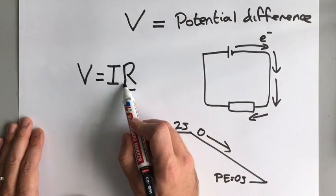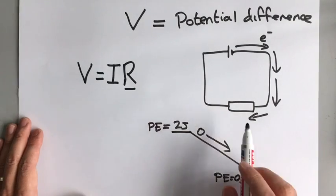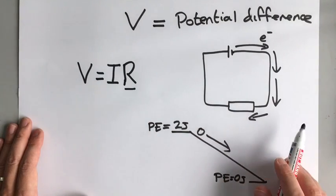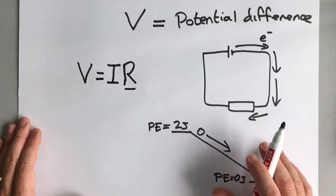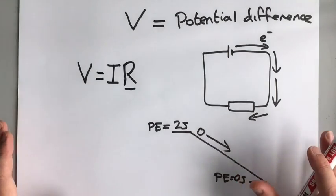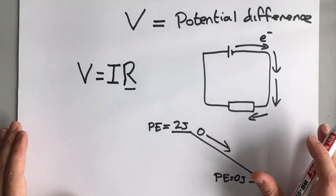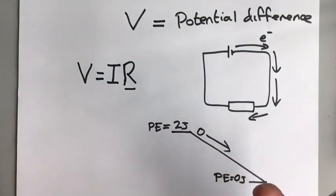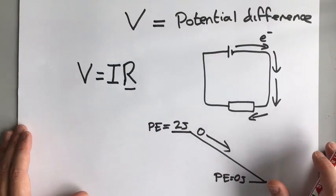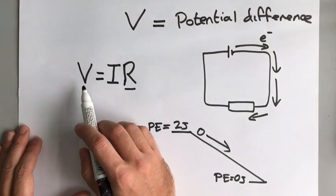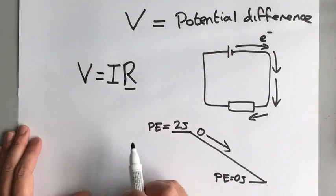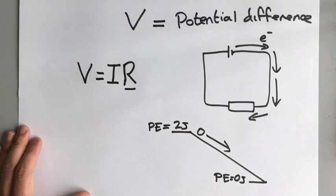Resistance is how much the components in the circuit try to stop the electrons flowing. If you have a component like a resistor that has a very high resistance, it's trying very hard to stop those electrons flowing. So voltage equals current times resistance: V = IR.